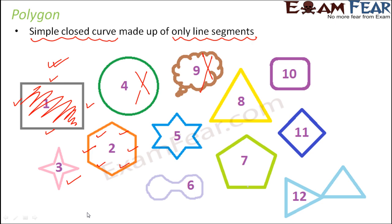Let me talk about one or two more examples. Let's look at image number 12. It is made up of line segments and it is also a closed curve, but is it a polygon? It is not a polygon, because this is not a simple curve — it is a non-simple curve because the curve crosses itself at one point. Many times children think that to become a polygon, the most important criteria is that the shape should be made up of line segments. But to become a polygon, all three criteria must be matched: it should be a simple curve, a closed curve, and made up of only line segments.